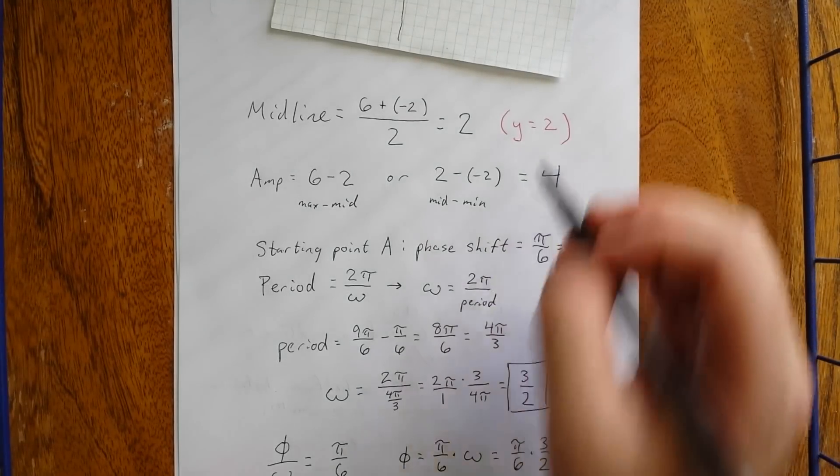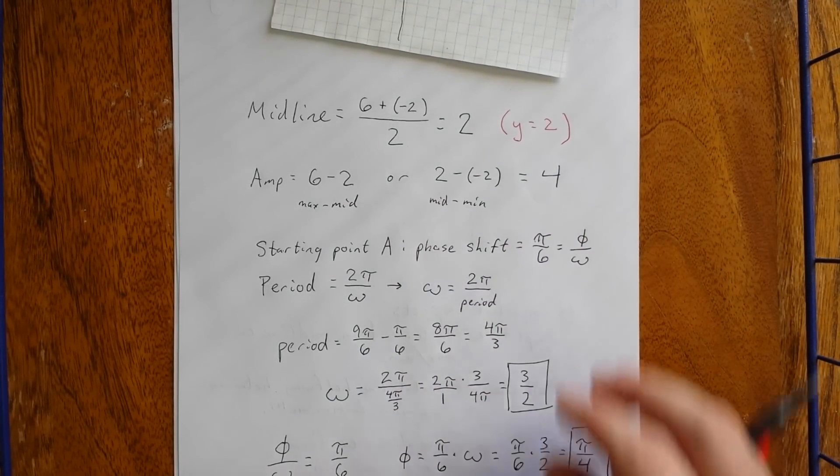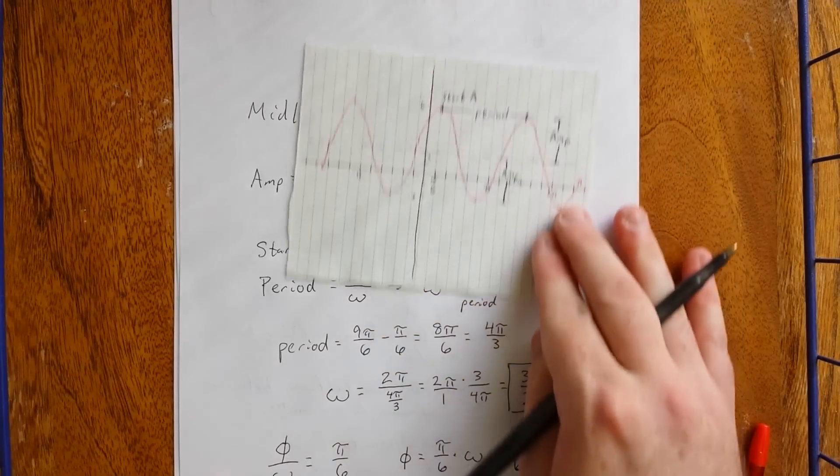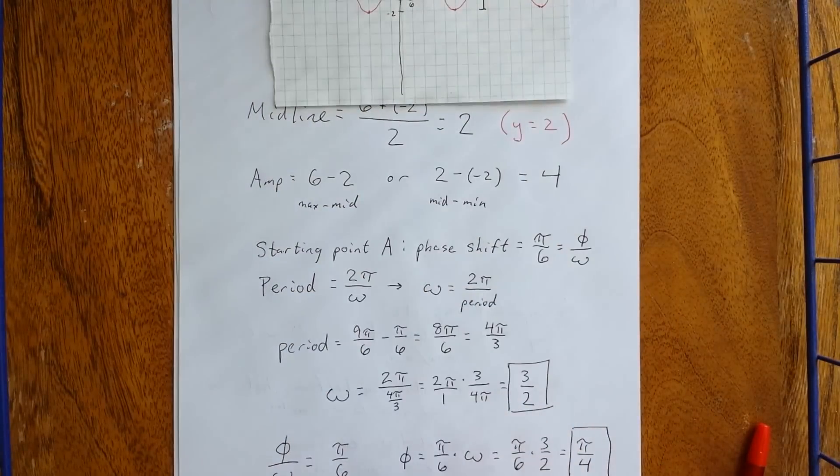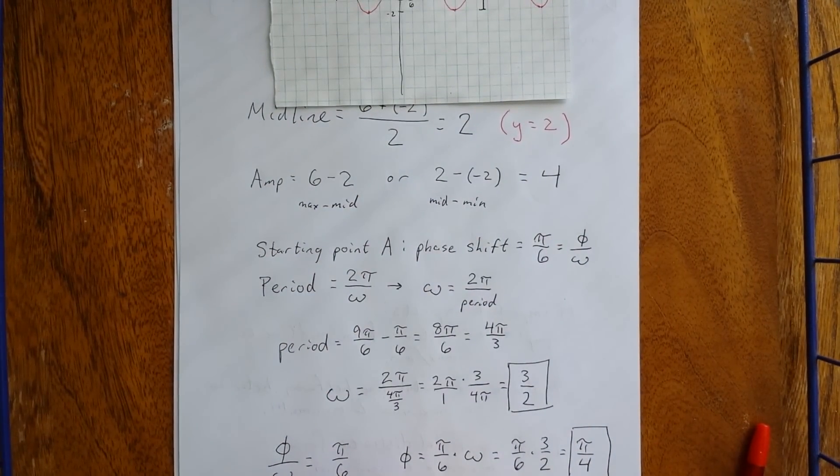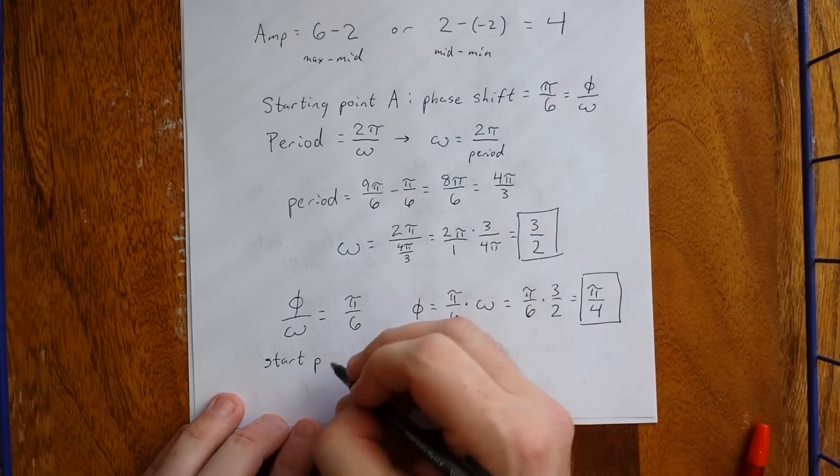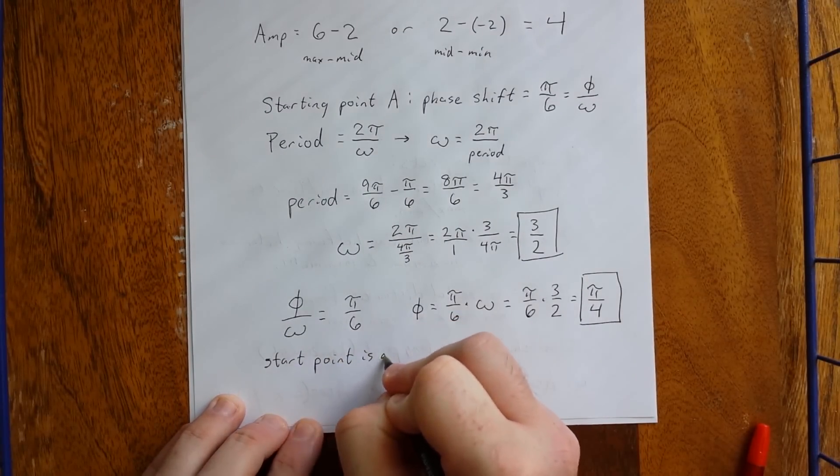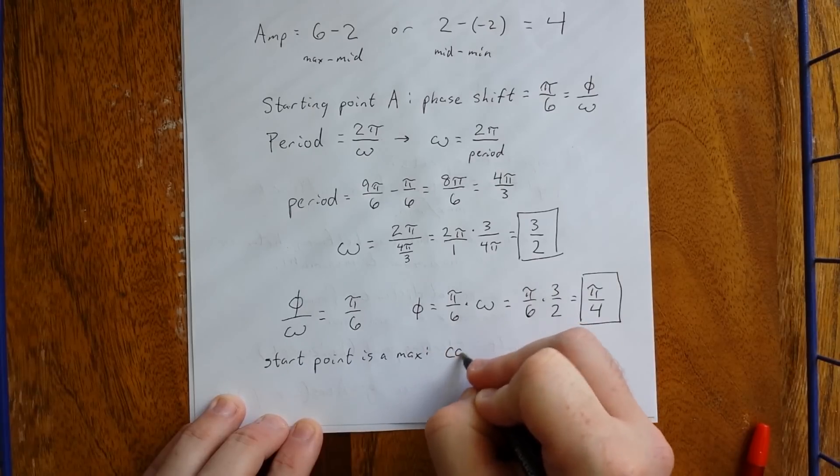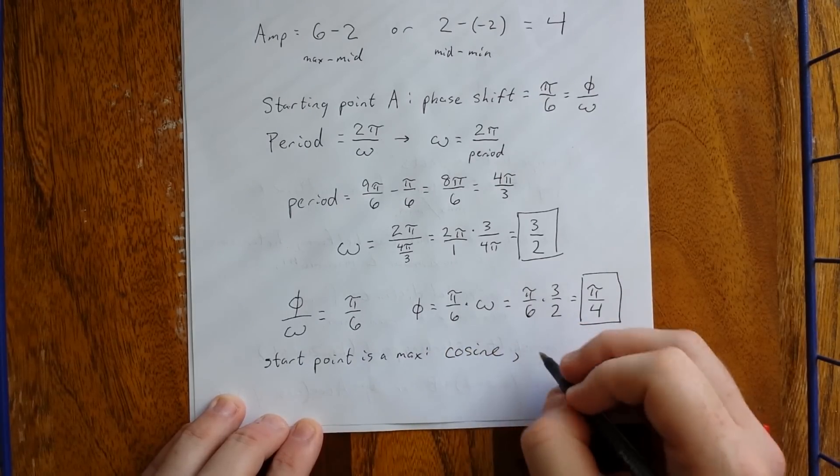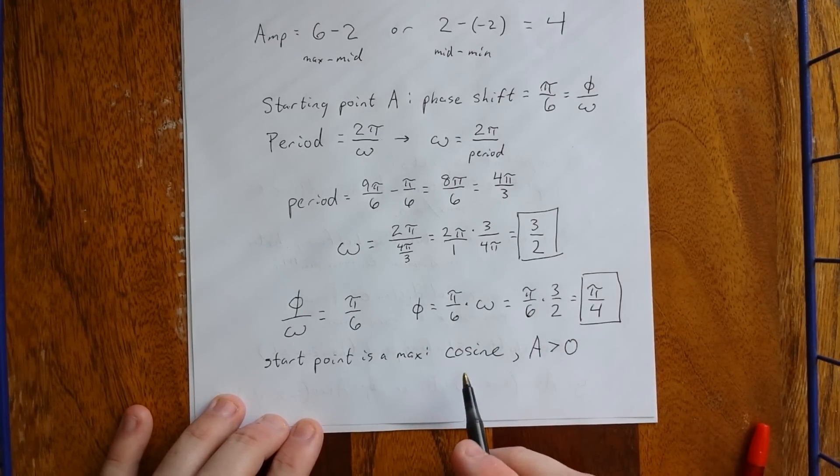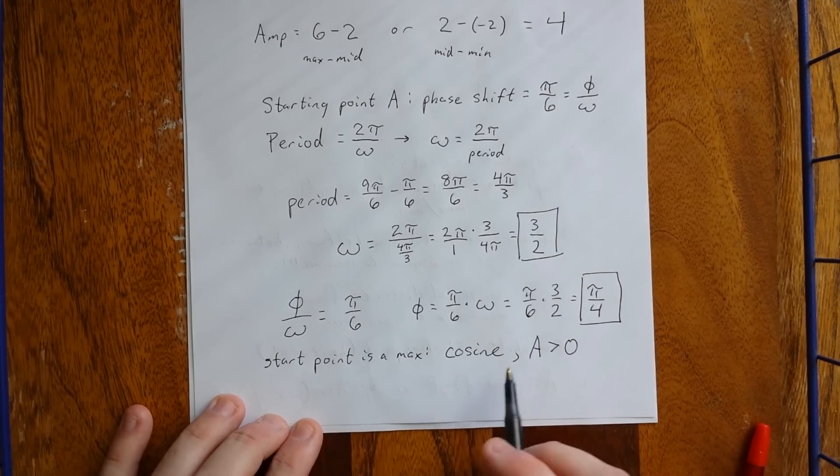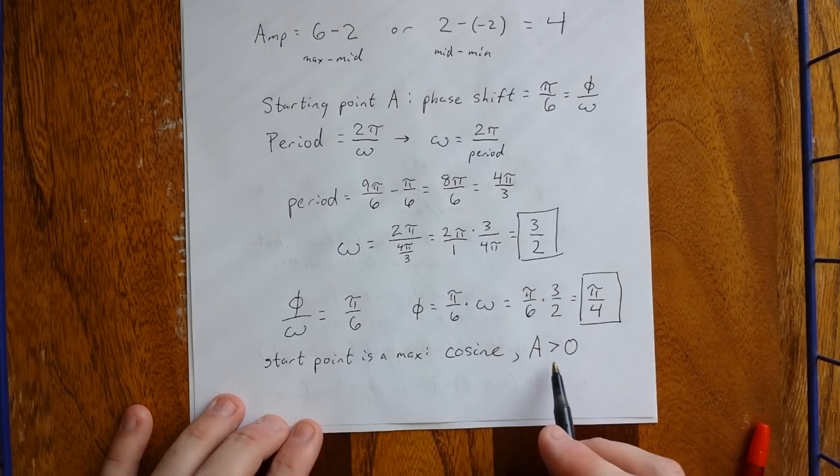We have that the amplitude is 4 and that the midline is 2. If we put all of these aspects together, we can get our equation. Now this was all based on using a starting point of A. A is a local maximum. So starting point was a local max. Starting point is a maximum. That tells us two things. For one, the graph is a cosine. And for two, it tells us that the value of a is going to be positive. Anytime we start at a maximum or a minimum, it's going to be a cosine graph. Starting at a maximum means a positive value for a. Starting at a minimum means a negative value for a.